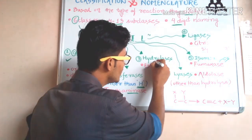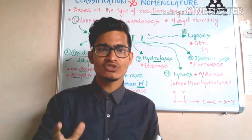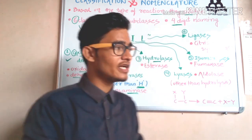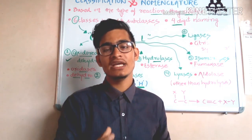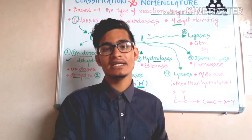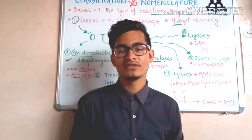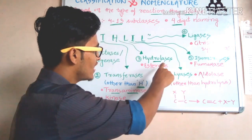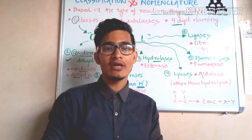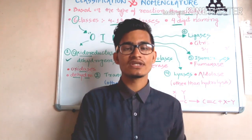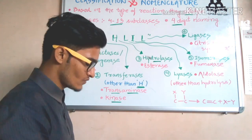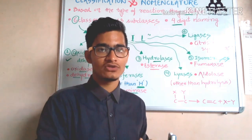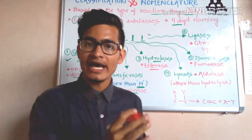Now the third one is hydrolases — the name indicates it is going to do hydrolysis, or the breaking of different kinds of bonds. The bond could be a peptide bond, glycosidic bond, C-N linkage, C-O linkage, P-N linkage, or C-P linkage — any linkage present in a particular compound can be broken by such enzymes. That is known as hydrolysis. For example, esterases are going to break the ester bond.